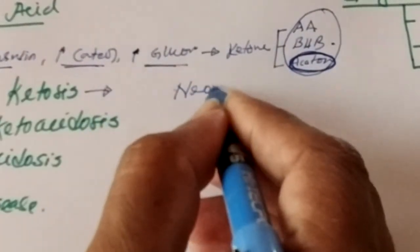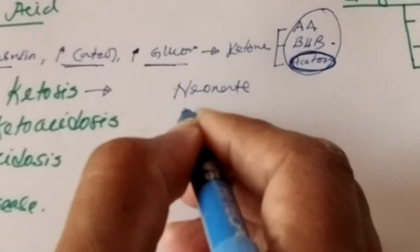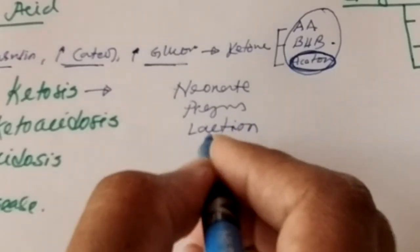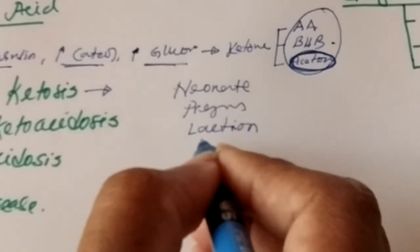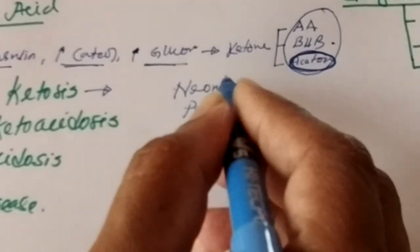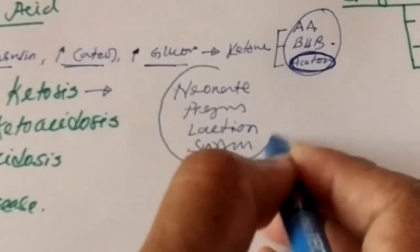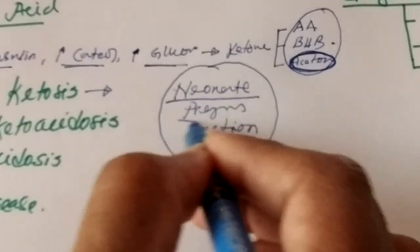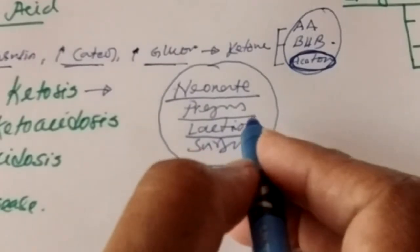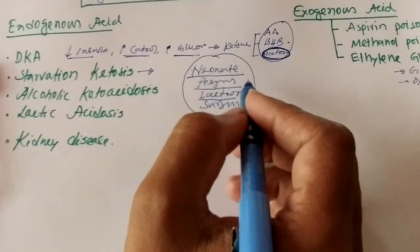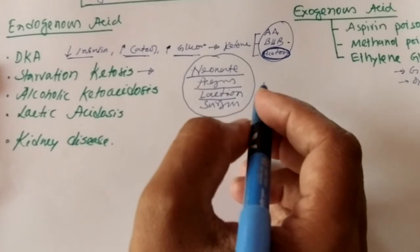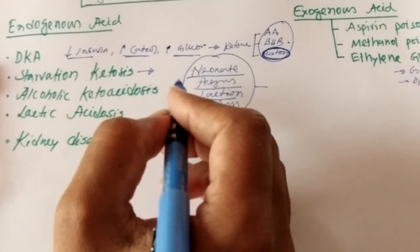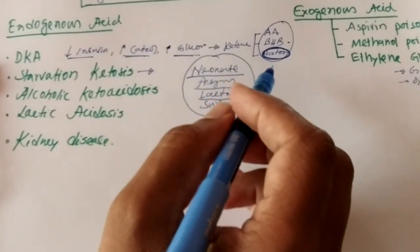Situations of high glucose demand include: neonates, pregnancy, lactation, and stressful conditions like surgery. In these situations, if the patient undergoes any degree of starvation — even just two to three hours — they can develop starvation ketosis and subsequently high anion gap metabolic acidosis.